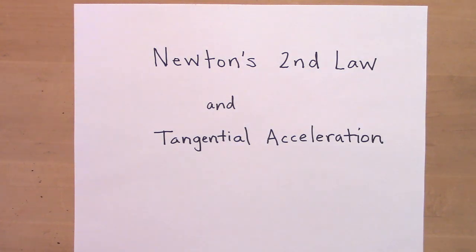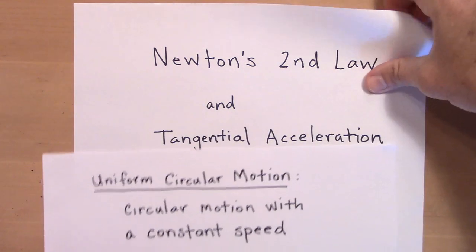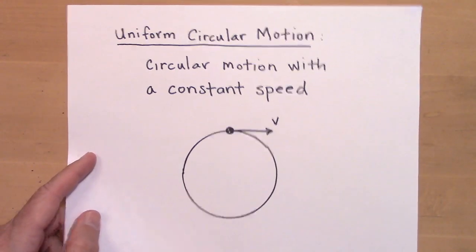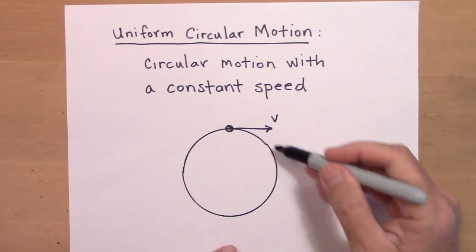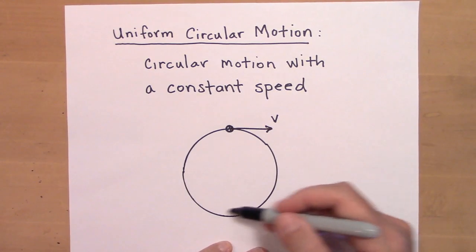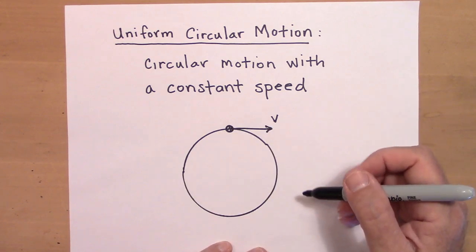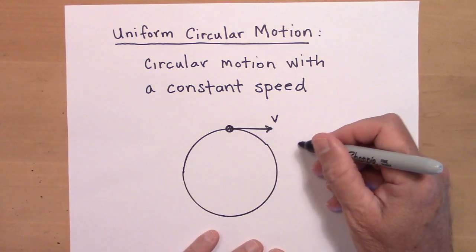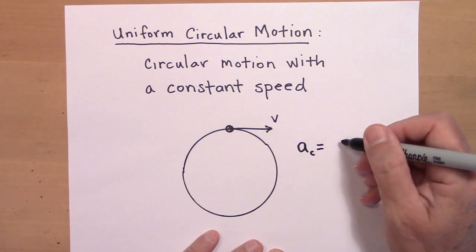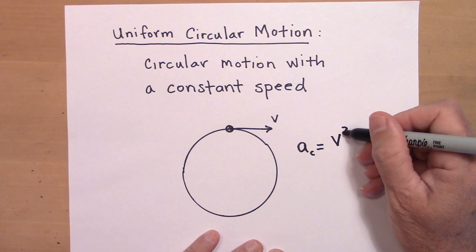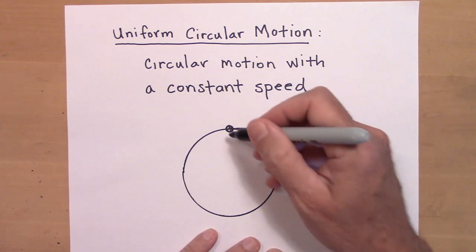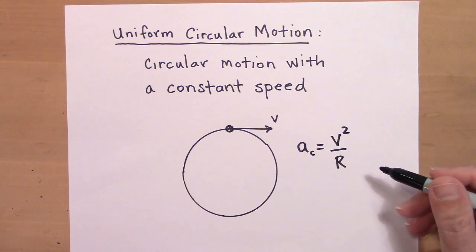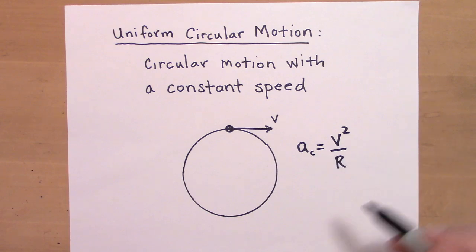We've already talked about uniform circular motion, where that's motion where an object moves around a circle at a constant speed. Just to review quickly, if an object's moving around at a constant speed, like 10 meters per second the whole time, then it's going to have a centripetal acceleration AC equal to V squared over R — how fast it's moving, squared, divided by the radius of the circle.